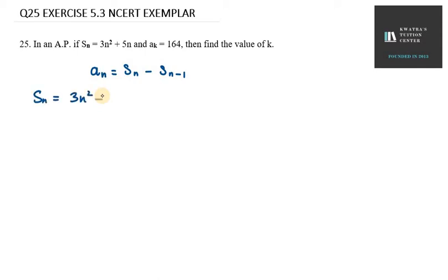It is 3n squared plus 5n. Now if you have Sn minus 1, what do you want to do? We will put n to n minus 1. So n minus 1 is done. Now open this and simplify it.